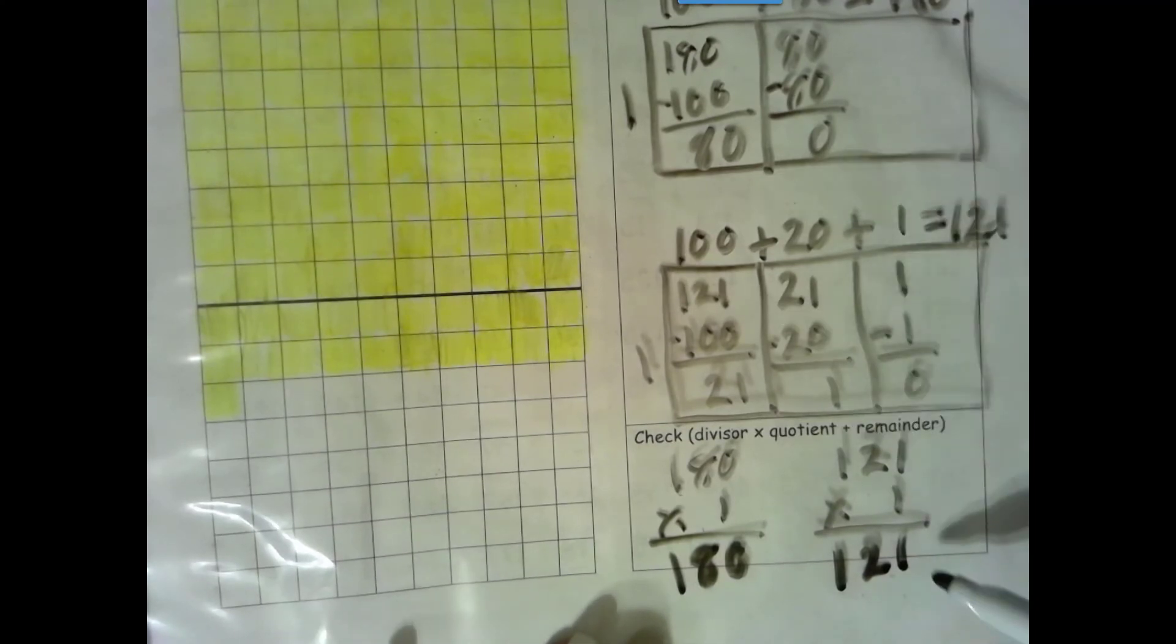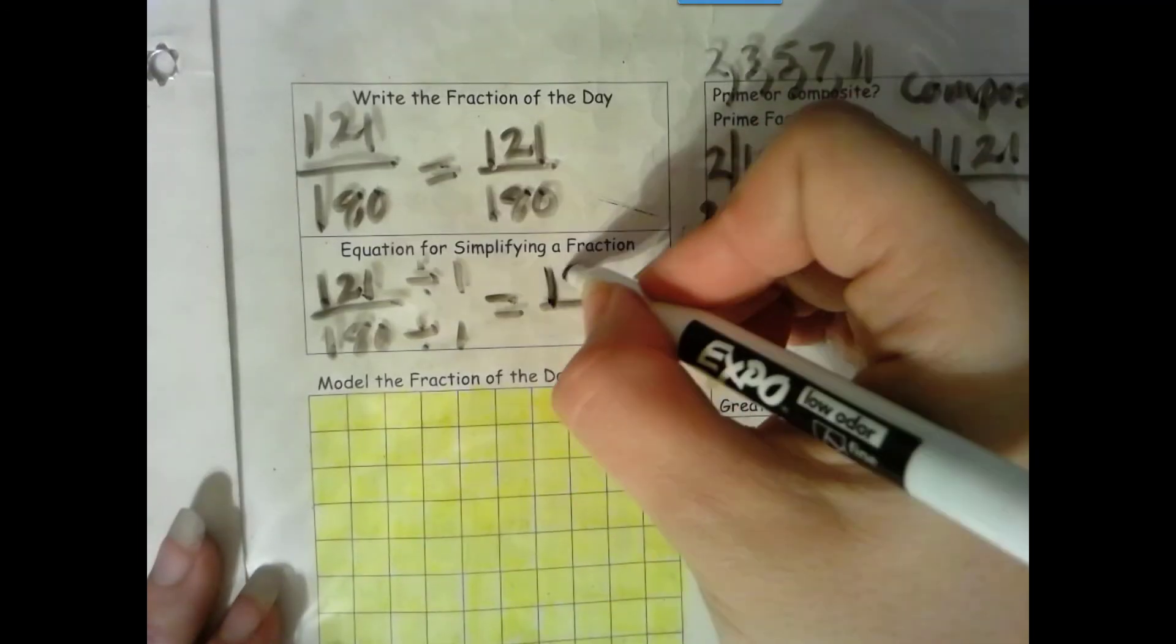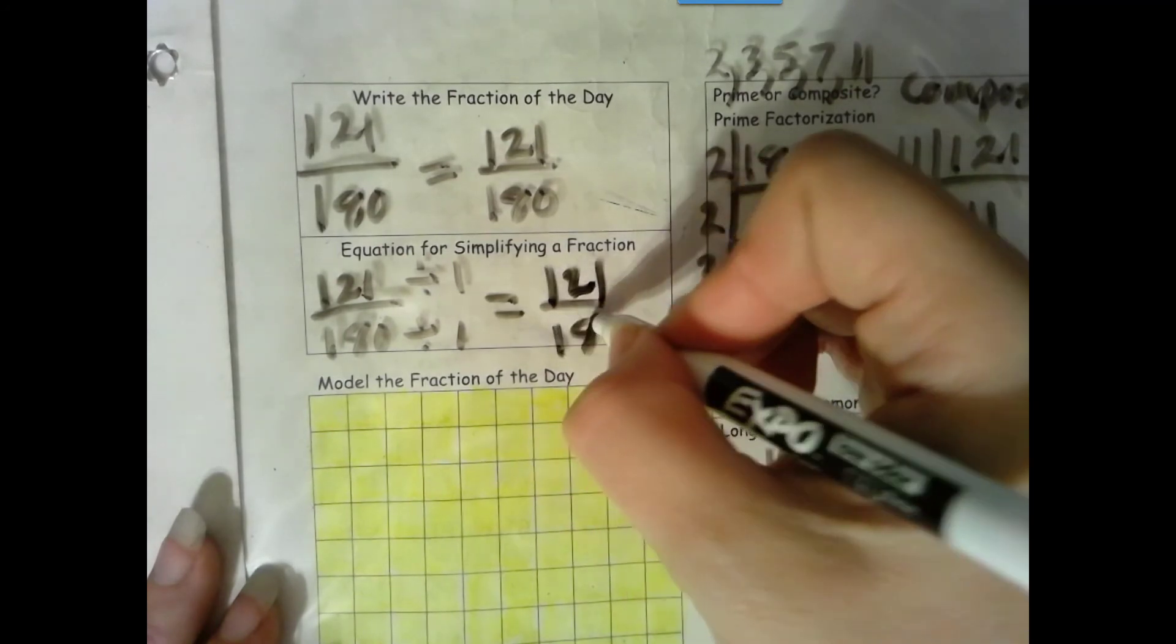So 121, that matches our dividend. Check. 180, that matches our dividend. Check. So our numerator is definitely 121, and our denominator is definitely 180.